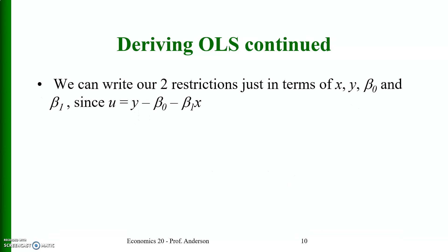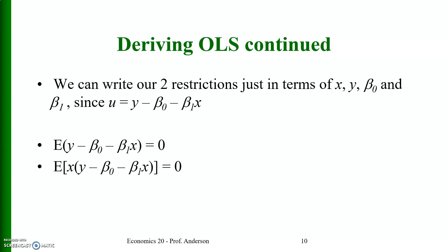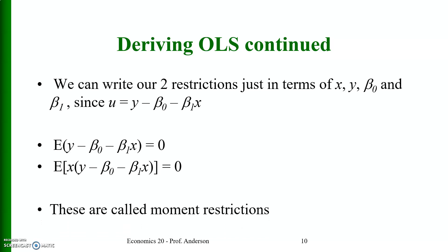We can write our two restrictions in terms of x, y, beta naught, and beta_1. Since u = y - beta naught - beta_1 * x, the restrictions become: E[y - beta naught - beta_1 * x] = 0, and E[x(y - beta naught - beta_1 * x)] = 0. These are called moment restrictions.